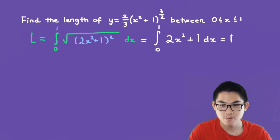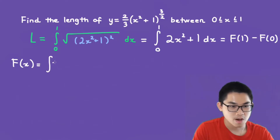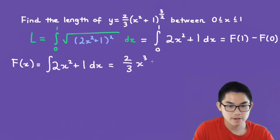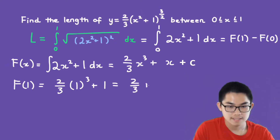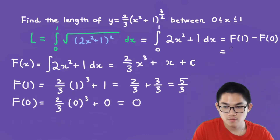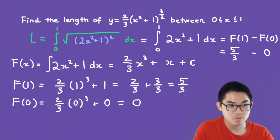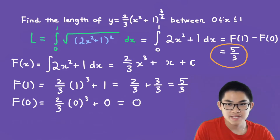From the fundamental theorem of calculus, this equals F(1) minus F(0). Big F of x is the integral of 2x squared plus 1, dx, which gives 2 over 3 times x to the power of 3 plus x. F(1) equals 2 over 3 plus 1, which is 2 over 3 plus 3 over 3, giving 5 over 3. F(0) equals 0. So F(1) minus F(0) equals 5 over 3. That is the length of the function between 0 and 1 on the x-axis.